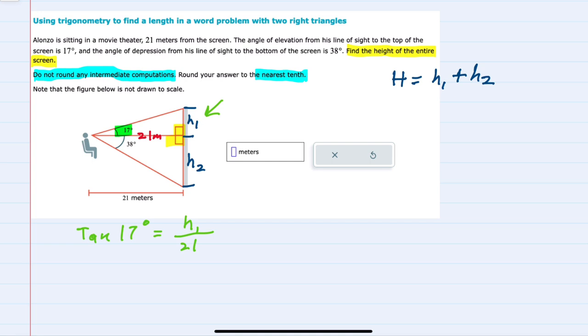And from here, solving for h1 just means multiplying both sides by 21. So h1 equals 21 times the tangent of 17 degrees. We have h1, we can move on now to h2.